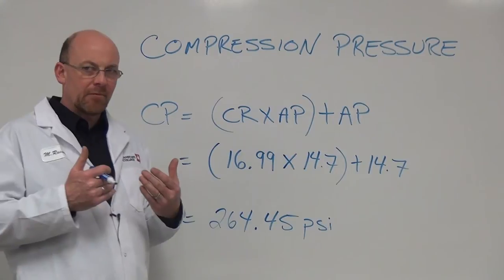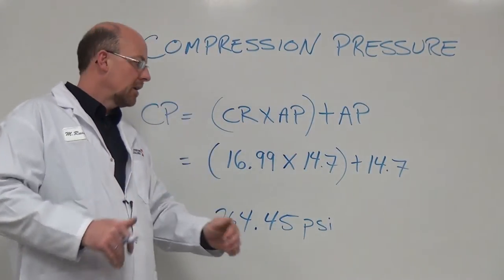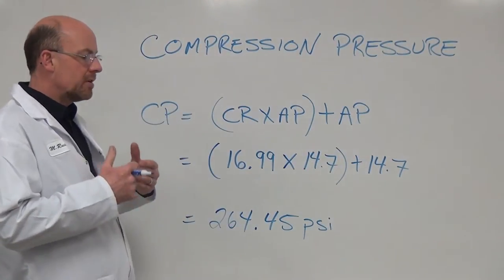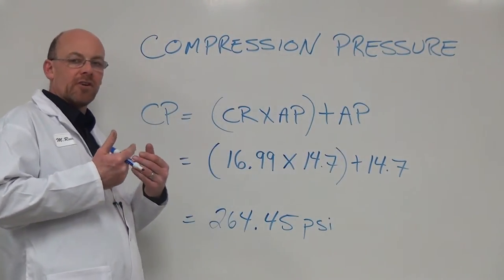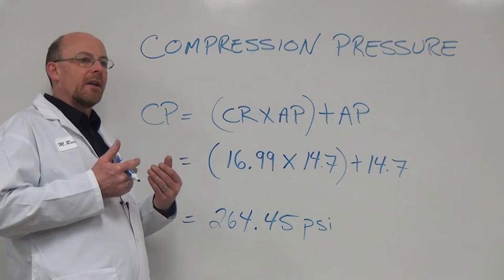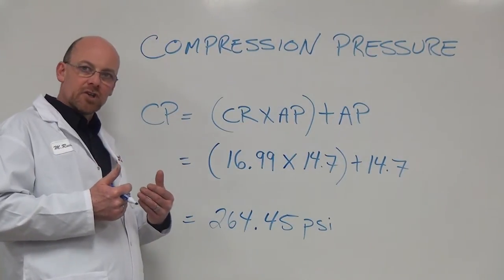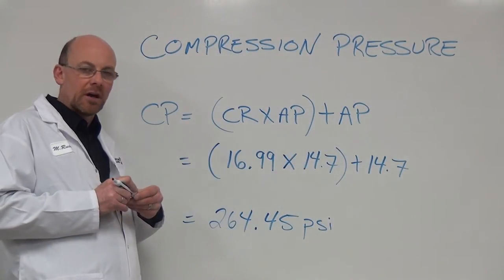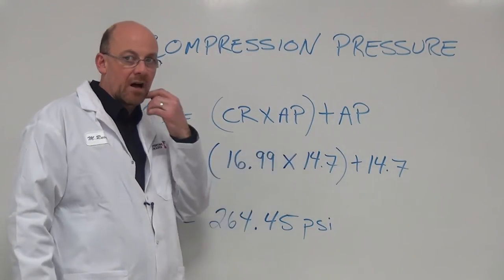And typically atmospheric pressure here geographically is 14.7 psi. So that's a nominal value unless of course in a formula you are at a different geographical location on the planet or something that's asked on a formula calculation question. It may have a different value.